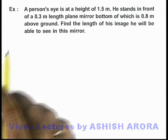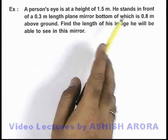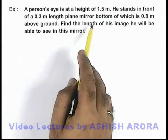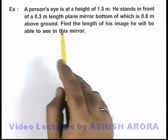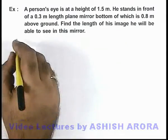In this example, a person's eye is at a height of 1.5 meters, and he stands in front of a 0.3 meter length plane mirror, the bottom of which is 0.8 meters above the ground. We are required to find the length of his image he'll be able to see in this mirror.